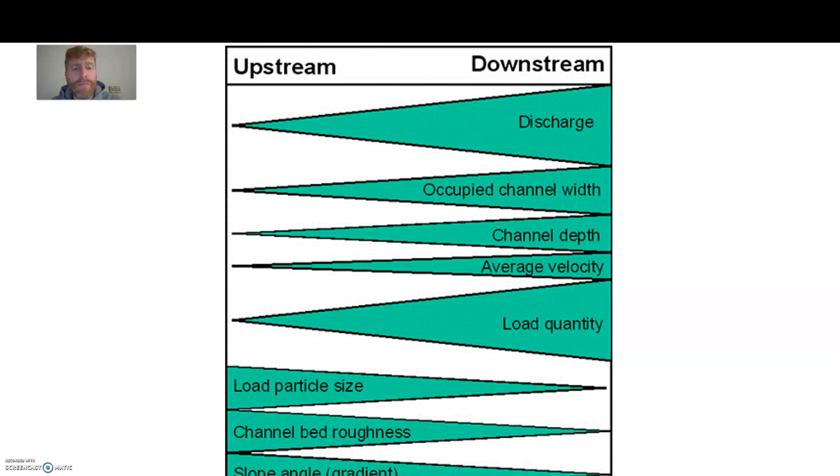And then you notice the diagram kind of flips a bit, and what this is showing is that some things reduce as you go downstream. So load particle size, the size of the sediment that the river is carrying gets smaller. So you generally find bigger rocks are higher in the river and smaller rocks are carried further down the river. The channel bed roughness decreases as you go downstream, so a much rougher channel bed causing much more turbulent flow in the upper course and a much smoother channel bed in the lower course. And then the slope angle, the gradient, gets smaller or reduces as you go downstream, and we know that from the long profile.